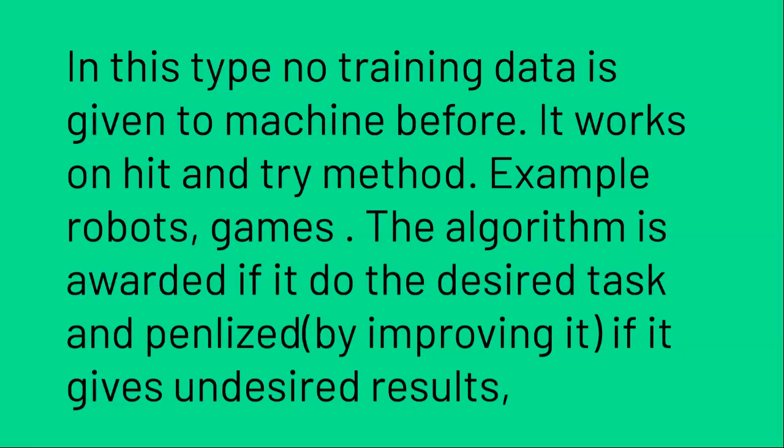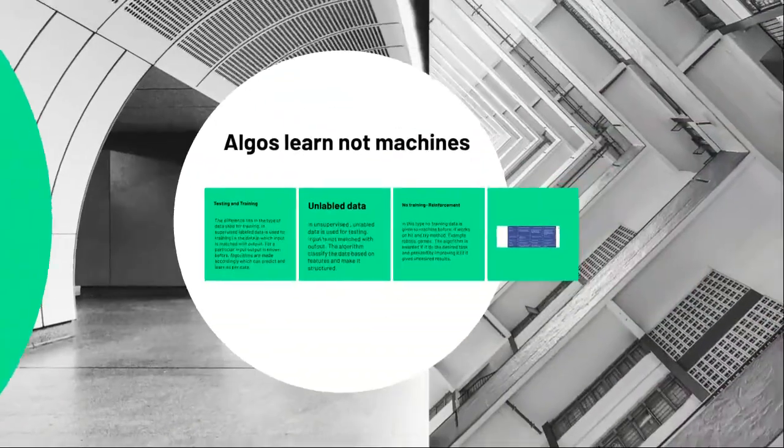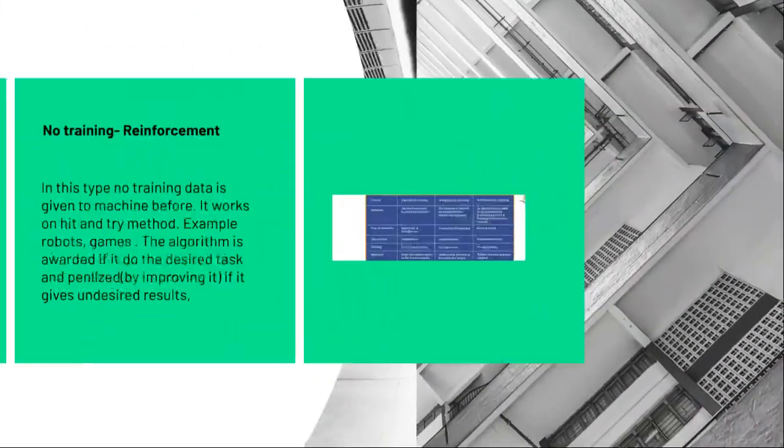The algorithm is awarded if it does the desired task and penalized if it does not. Penalizing the algorithm means we improve it. It is a reward-based system — if something goes wrong, the machine is penalized. Giving a penalty to the machine means we improve the algorithm; the algorithm is actually rewritten. If the algorithm is not working as desired, it is improved and rewritten. This is what we say — the algorithm is penalized, and by doing this the machine is penalized.